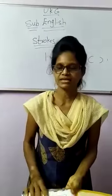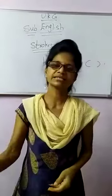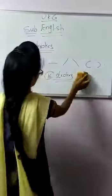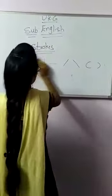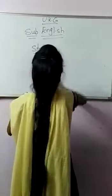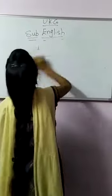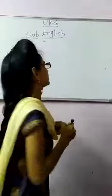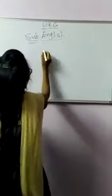So let's start with our alphabets. How many alphabets are there? There are 26 alphabets. In the 26 alphabets there are 3 types of letters. Let's see what those 3 types are.